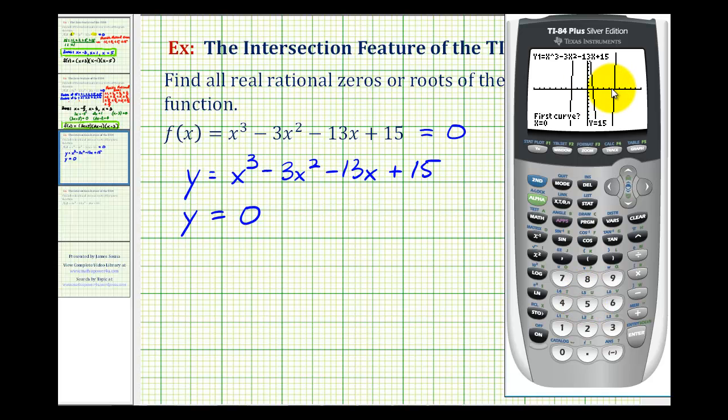The only thing we have to do is move the cursor closest to the x-intercept that we're trying to find. Let's work our way from left to right. So I'm going to press the left arrow until I see the cursor close to the left-most x-intercept. So that's very close.